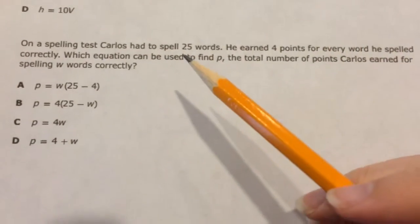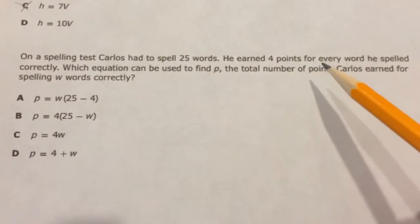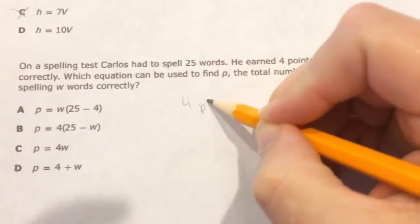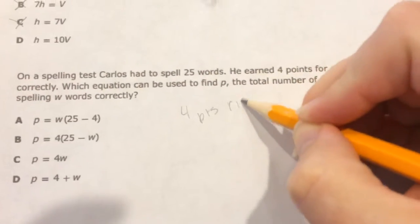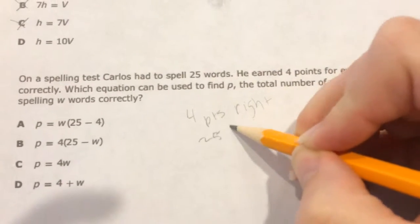Alright, so it says on a spelling test, Carlos had to spell 100 words. He earned 4 points for every word he spelled correctly. So 4 points for the right ones, and there's 25 total.